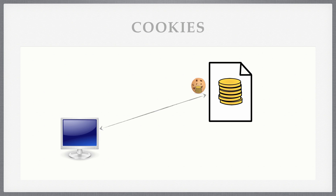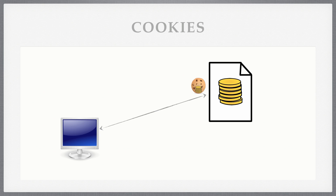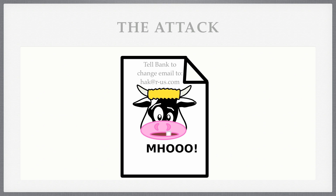It would seem to be a rather foolproof mechanism. When you browse to the attacker's site, that cookie stays on your machine and doesn't get sent over. But what the attacker can do is put something on his page. If we take a closer look at that page, he's putting instructions for your browser — normally in the form of JavaScript or some AJAX — saying: tell the bank to change the email address to hack@rs.com.